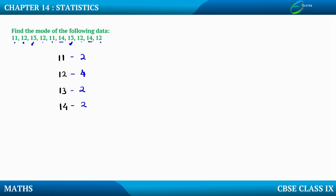So which is the number that appears for the maximum number of times? Clearly we can see that 12 occurs for maximum number of times, that is 4. So we can say that highest frequency is 4.